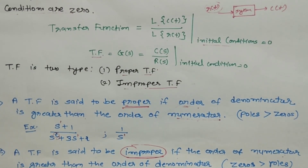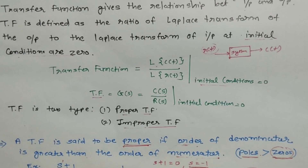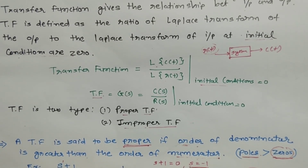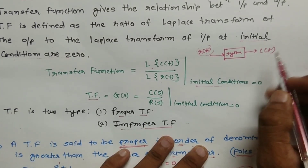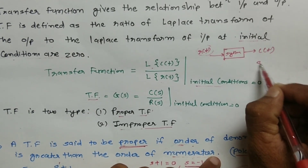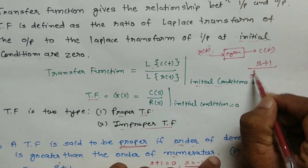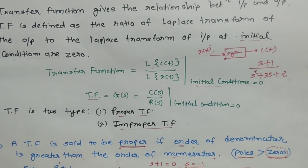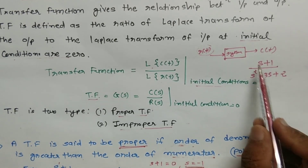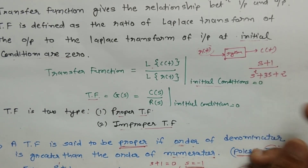In a transfer function, the numerator polynomial gives the zeros and the denominator polynomial gives the poles. Let's discuss zeros and poles by an example. Taking the transfer function (s + 1) / (s² + 3s + 2) — this is a proper transfer function because the denominator order is higher than the numerator order.